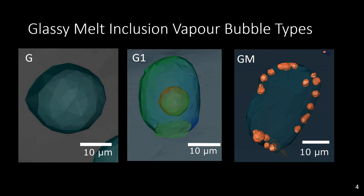Then there's the classic with a single vapor bubble which I've called G1, and then there was this other type which I hadn't really thought of or encountered that much in the literature which I'm calling GM, which is a melt inclusion with multiple vapor bubbles on the sides of it. Almost always when you have multiple vapor bubbles you only get them on the margins, on the edges of these vapor bubbles.